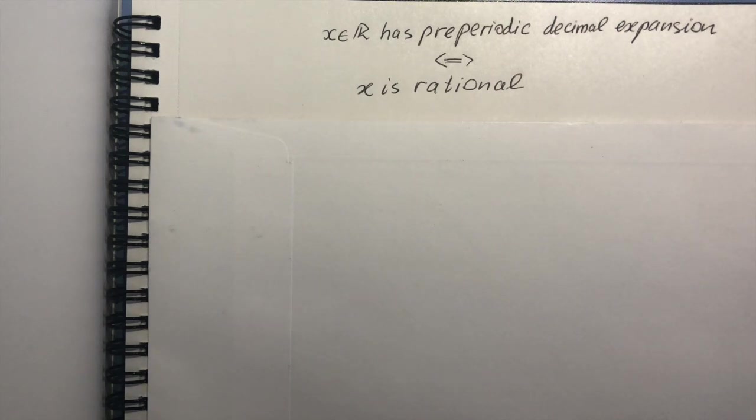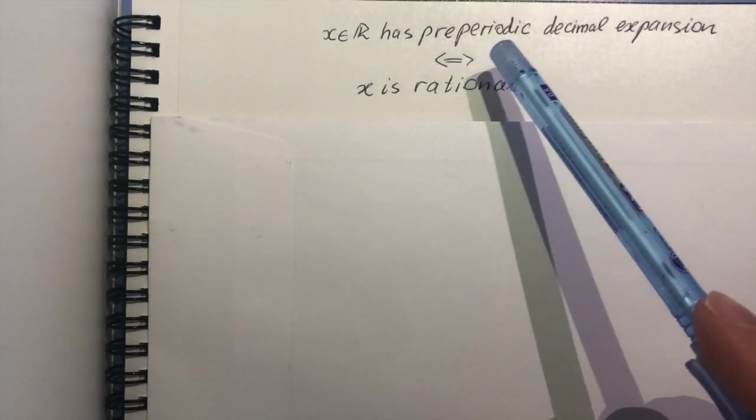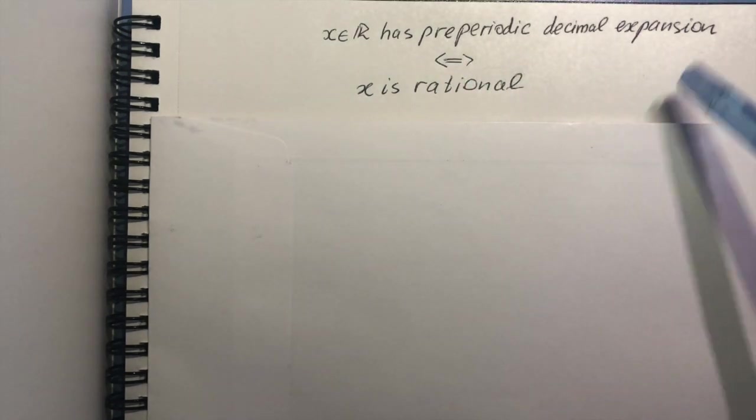Hi, I want to dedicate this video to a problem, the result of which is used quite often in mathematics, but the proof of which is quite often overlooked. So the question is about decimal expansion, and here's what's true. X is a rational number if and only if it has a preperiodic decimal expansion.